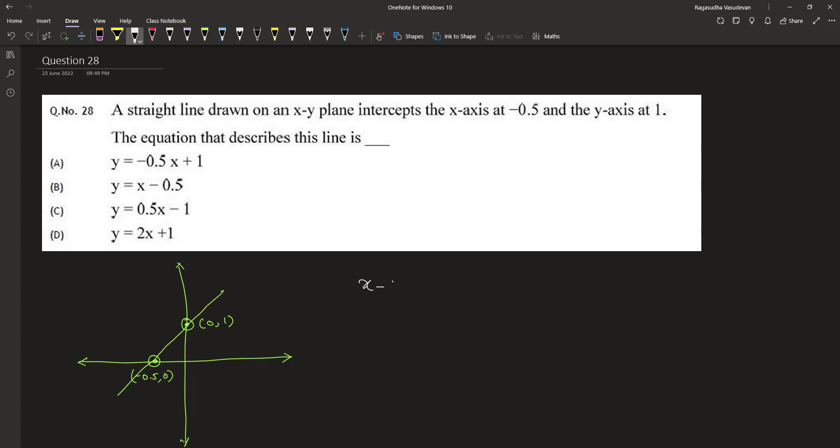The formula is x minus x1 divided by x2 minus x1 is equal to y minus y1 divided by y2 minus y1.